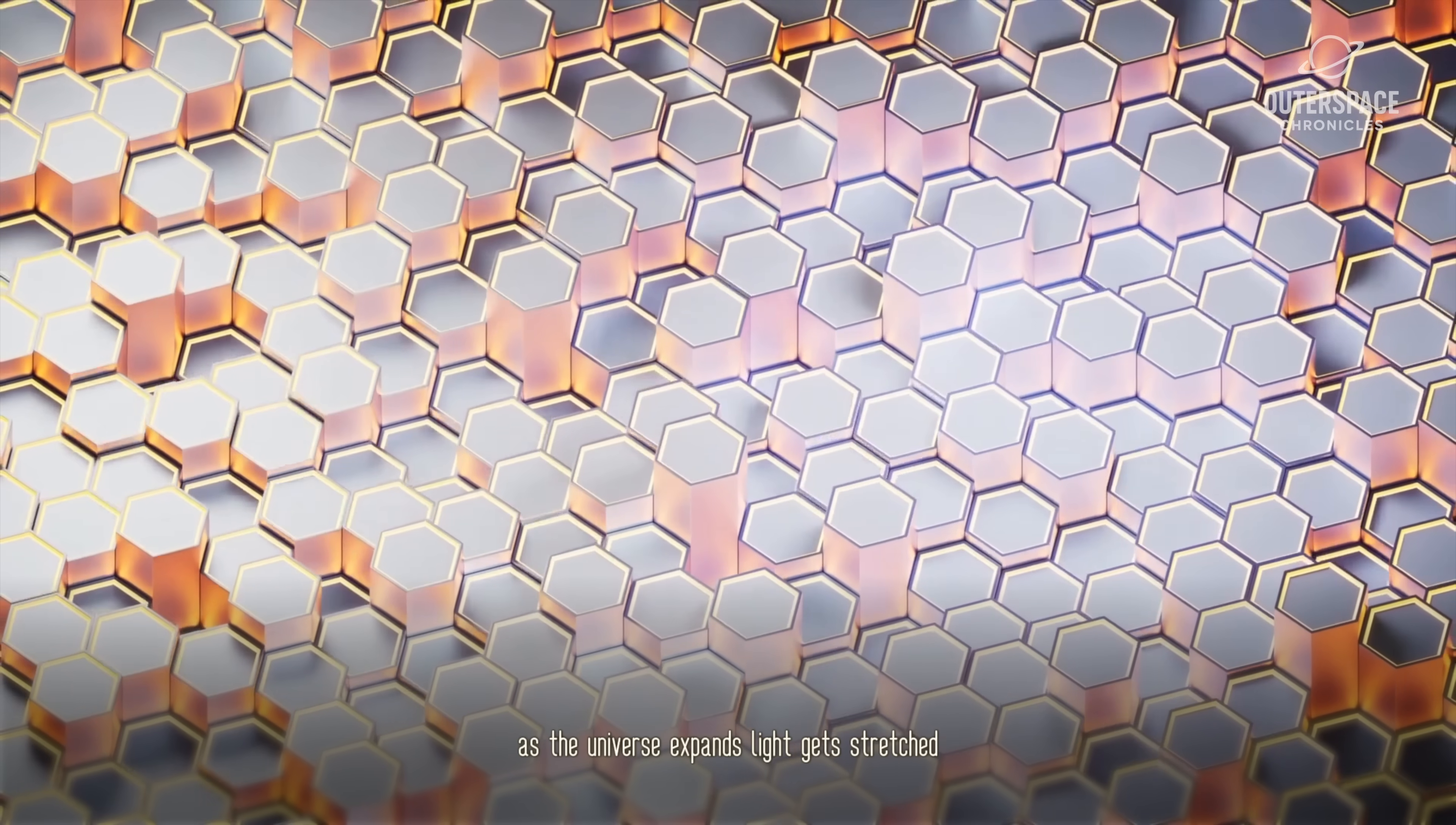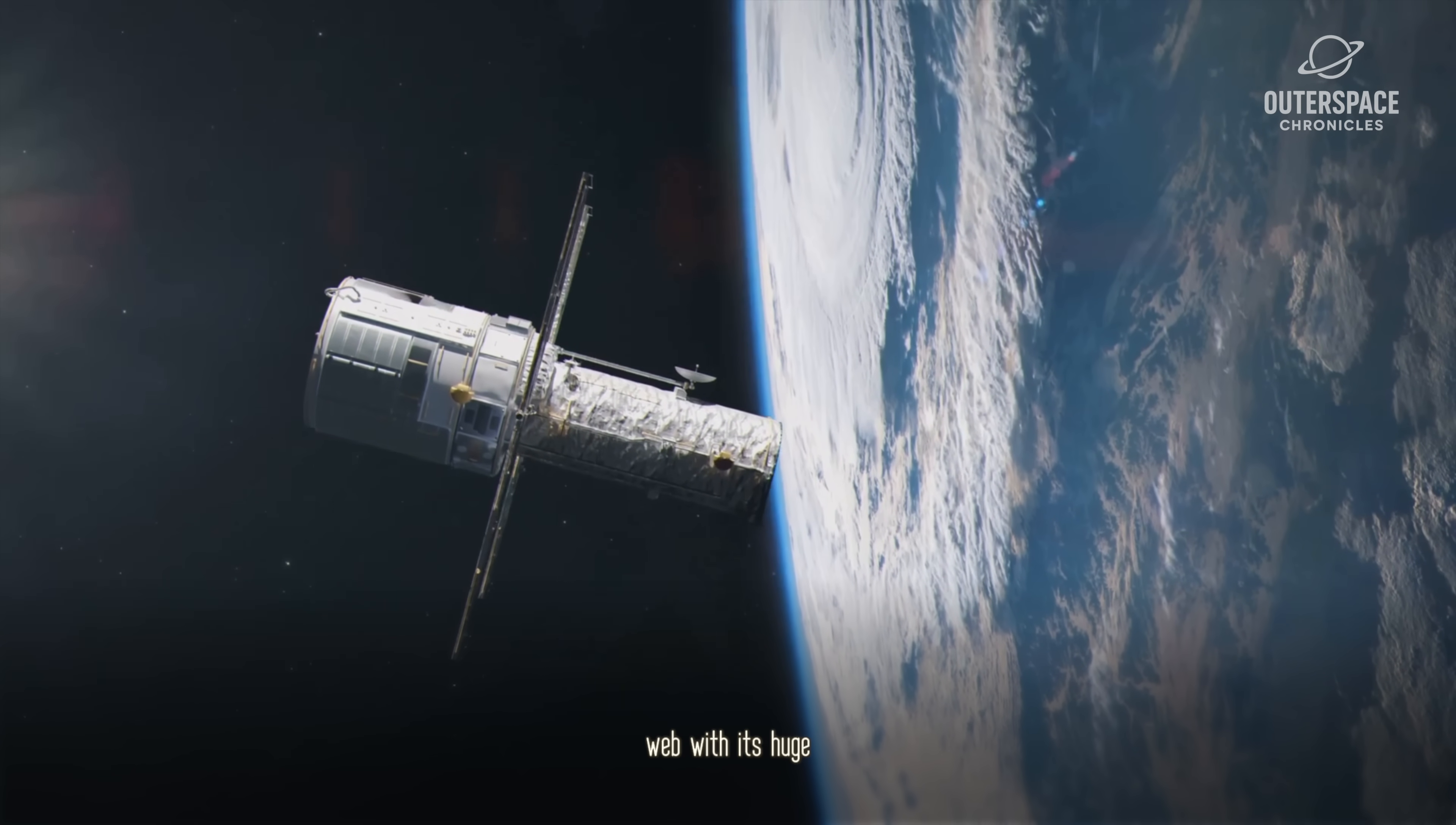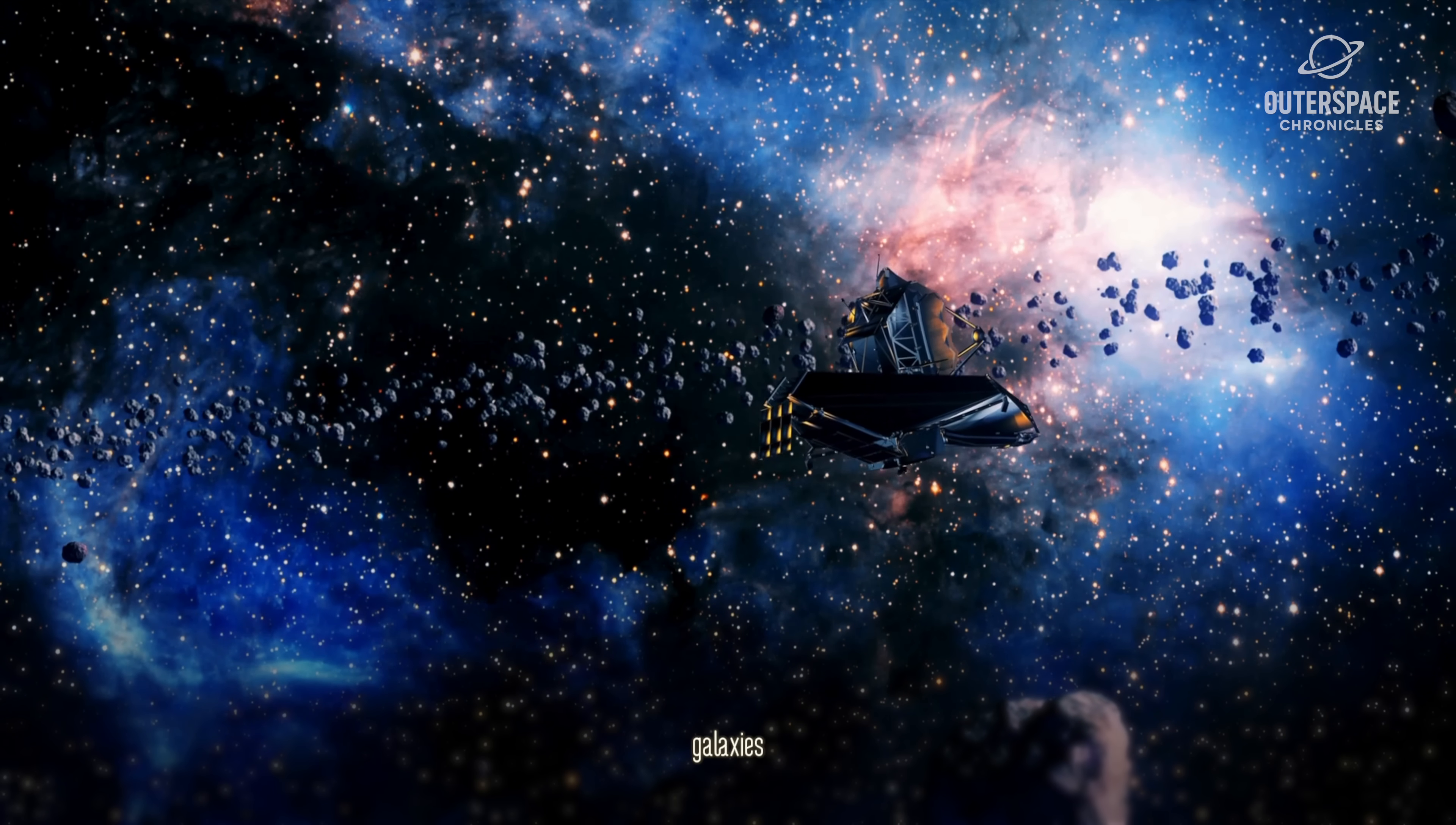Webb is an infrared specialist, and that is the crucial difference. As the universe expands, light gets stretched. Light that left the first galaxies as visible light has been stretched over 13.5 billion years into the infrared spectrum. Webb, with its huge golden mirror, was designed to catch these exact signals.